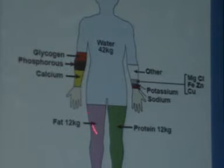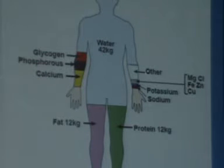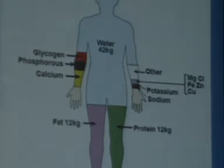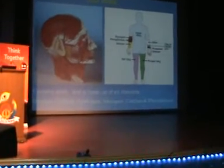Along with water, you have fat — that is around 12 kg, that comes next. You have proteins, that comes next. Then you have glycosine, phosphorus, calcium — and calcium is what our bones are made up of. And you have elements like magnesium, chloride, iron, zinc, potassium, sodium, and others. So if you look at it very simply, water again is a chemical molecule. In this way, if you see, everything in our body is essentially made up of molecules.